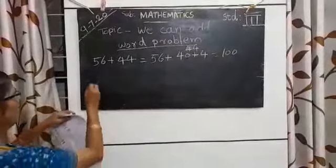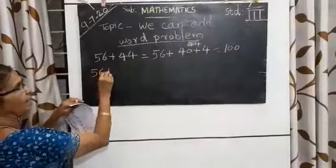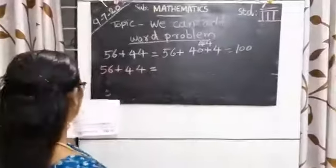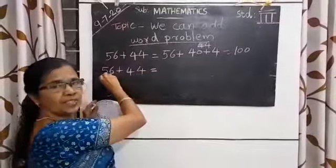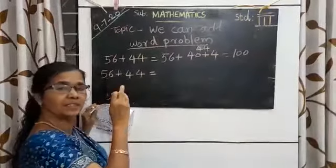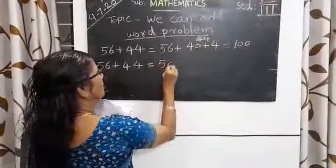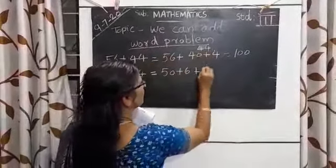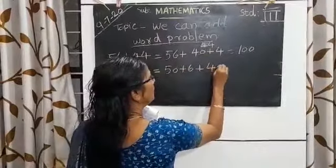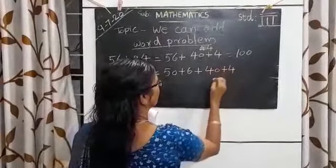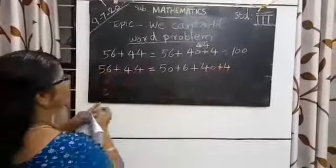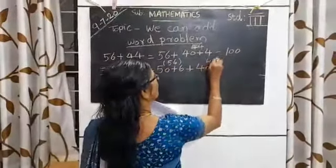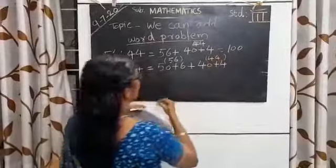Another way: 56 plus 44. We can split these numbers differently. Split 56 into 50 plus 6, and 44 into 40 plus 4. This is 56, this is 44. This is easy.